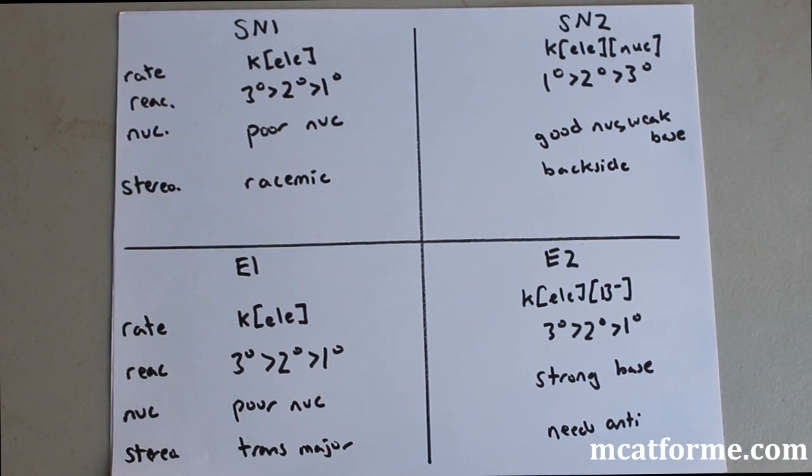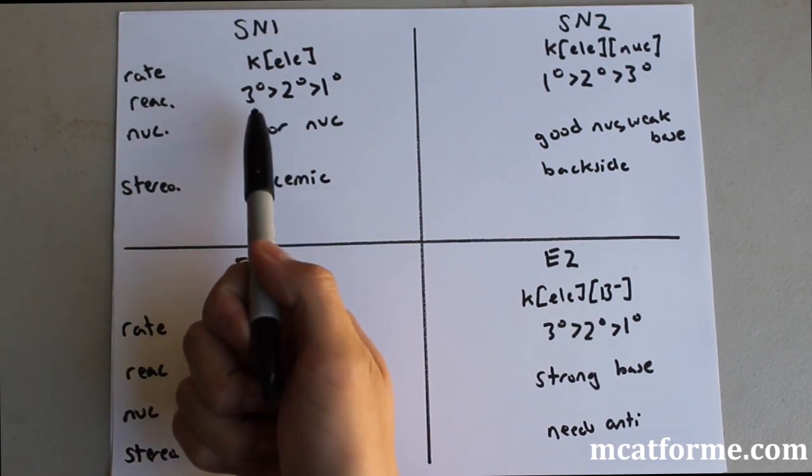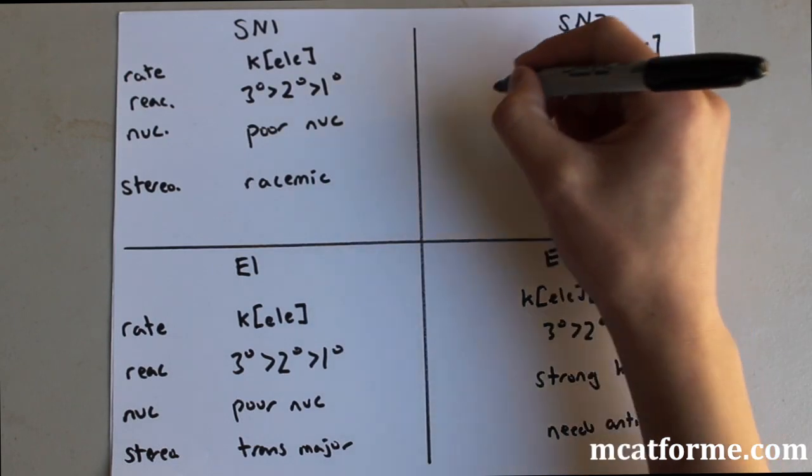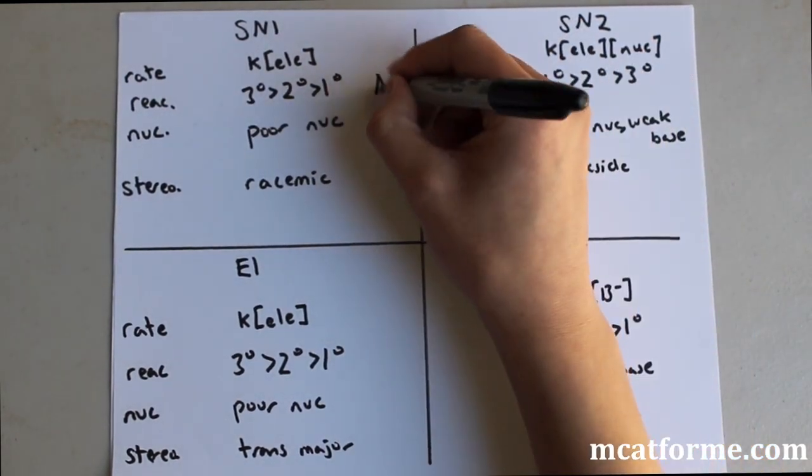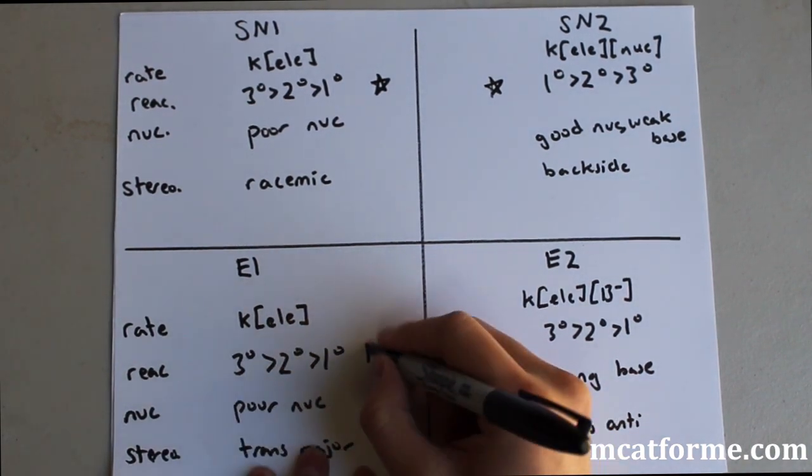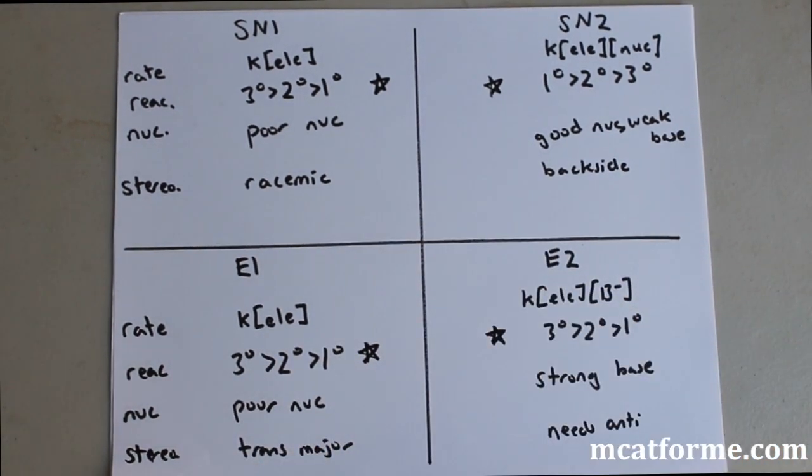In terms of reactivity, this is when it gets a little bit different. Remember, in SN1, we have tertiary being the best and primary being the least reactive. But in SN2, it's flipped. So here's something that we should remember, the reactivity. But in the reactivity of E1 and E2, they're always tertiary. Tertiary is always going to be the most reactive and primary is going to be the least reactive. And that's simply because secondary alkenes are going to be much more stable than primary or having no carbon surrounding it.